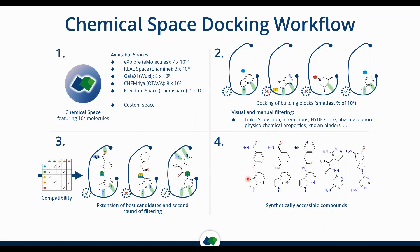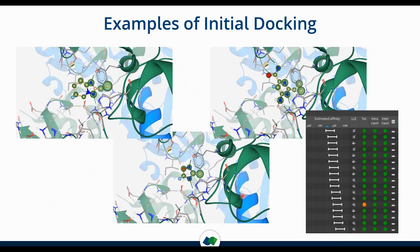By the end in step three, we end up with synthetically accessible compounds that we can either synthesize ourselves or outsource. Here is an example of the initial docking. Compounds are scored by our own scoring algorithm called HYDE, reflected by the green spheres — all those atoms are contributing favorably to binding affinity, which is always a good sign.